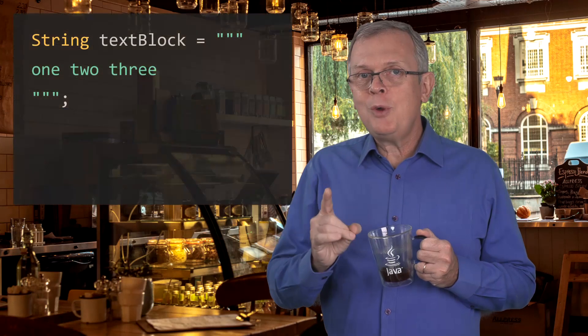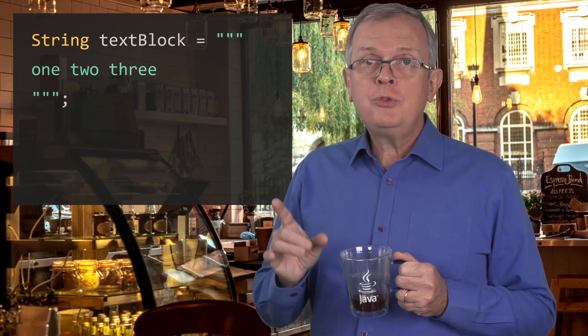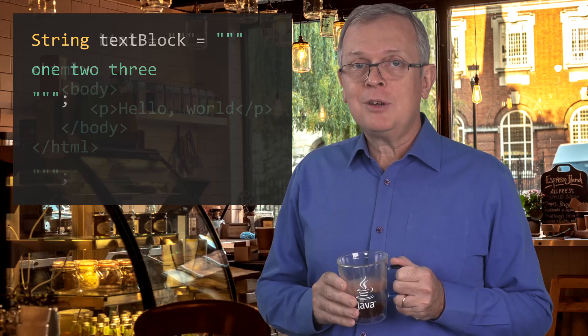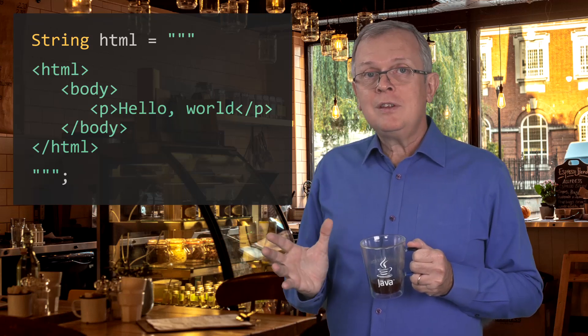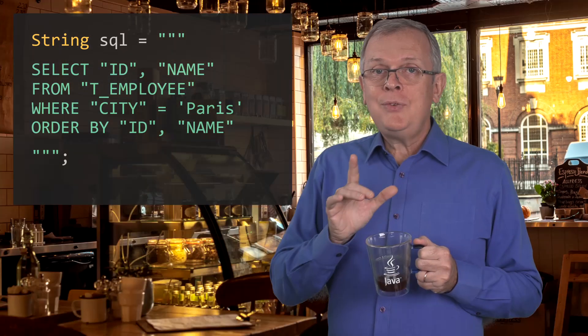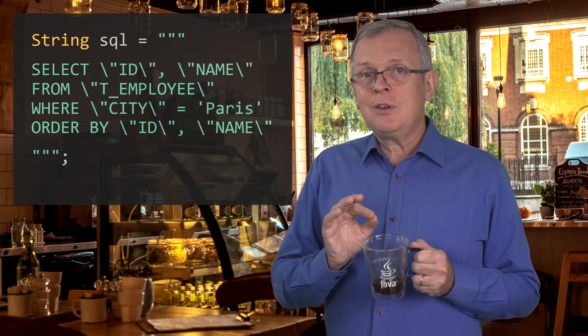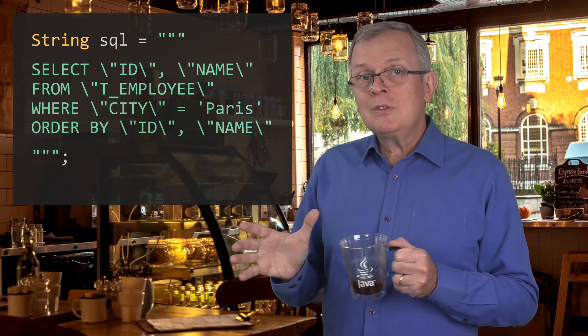How can you create a text block? Super easy. Just open a triple double quote followed by a line feed — this line feed is mandatory; if you omit it, you will get a compiler error. Then all the characters that follow are part of this text block, up to the next three double quotes that close it. The following text block is just what you would expect: a piece of HTML code with its indentation. The same goes for a SQL snippet. You do not need to escape the double quotes inside a text block, which is awesome. And you can still use escape sequences if needed, making it easier to copy existing strings into a new text block.